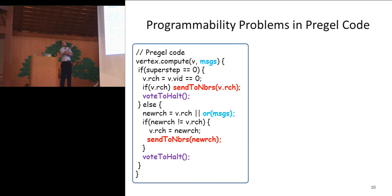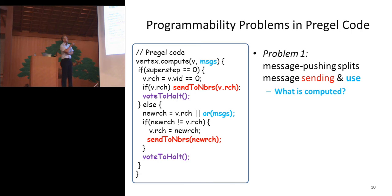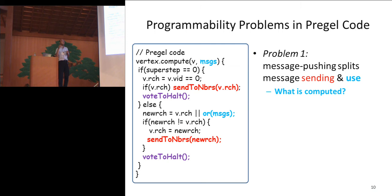Here is the complete code implementing that vertex-centric computation. We can find at least two problems about programmability in this code. First, because this uses the message passing style, the sending of a message and the use of a message are separated. This makes the program difficult to understand. For example, what is computed here? It is a difficult question — you need to investigate the whole code to see what the message is. This is the first problem: the program is not easy to understand.